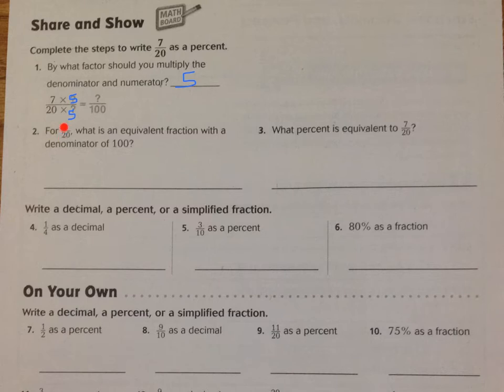For seven-twentieths, what is an equivalent fraction with the denominator of a hundred? So now you just multiply it out. Seven times five is thirty-five, and twenty times five is one hundred. So your equivalent fraction is thirty-five hundredths. So now that we have it in the base of one hundred, we can answer number three. What percent is equivalent to seven-twentieths? We take our thirty-five, our numerator, out of a hundred, and it's thirty-five percent.